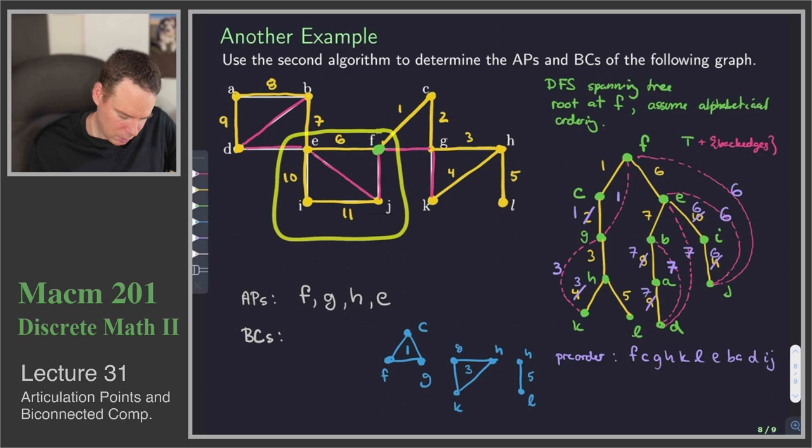So I've got F, E, I, and J. And those were all of the ones that were labeled with a 6.